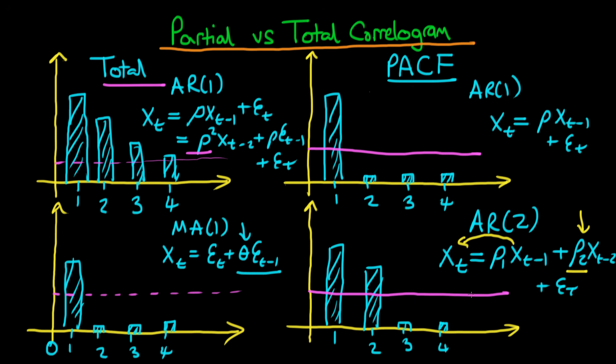You can see that partial autocorrelation functions are a way of diagnosing what type of AR process we have. If we have an AR1 process which has a partial autocorrelation function like this then that's indicative of the fact that we might have an AR1 process. Whereas if we have a partial correlogram which looks like this one down on the bottom here then that might indicate that we have an AR2 process.